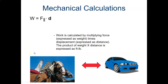Mechanical calculation has three steps. First, we're going to be converting into horsepower. Horsepower is used as a measure of work, and this is the formula for work: W, which stands for work, is equal to force times distance. Work is calculated by multiplying force — which is really weight — times displacement, which is distance, represented by the letter D. The product of those two numbers is expressed as foot-pounds. So W equals work, measured in foot-pounds.